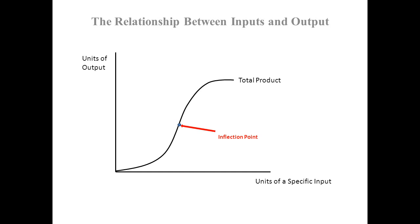Where the line was rising at a decreasing rate, in order to draw a tangent you would have to put the yardstick above the line. She stood on her toes and put the yardstick above the line. She said: to find the inflection point, think of where you have to move the yardstick from below the line to above the line. That somehow stuck with me. So the point at which it stops rising at an increasing rate and starts rising at a decreasing rate is called the inflection point.